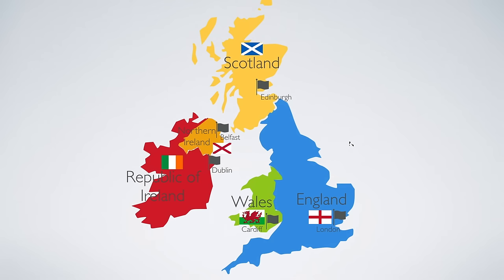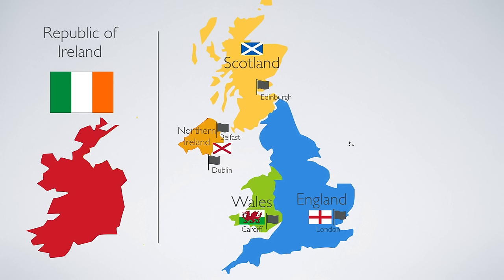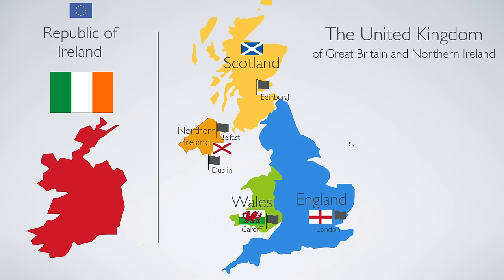This is where it gets complicated. These five parts form two different countries. The easiest one is the Republic of Ireland. It is part of the European Union, so they pay in euros. The other one is called the United Kingdom, or in full, the United Kingdom of Great Britain and Northern Ireland.